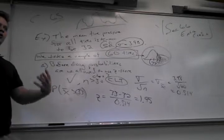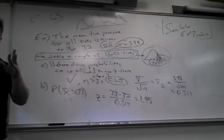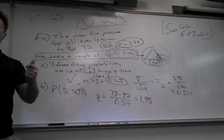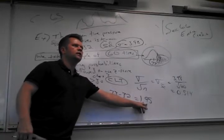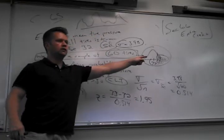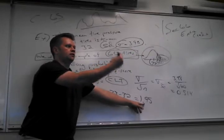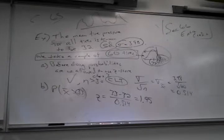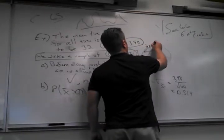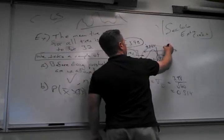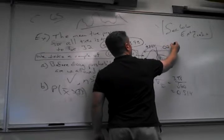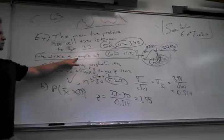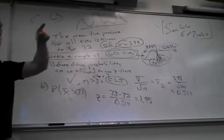When I look up 1.95 in the z-score chart, I get about 0.9744. So the actual answer — the probability that the sample mean is more than 33 — is about 0.0256. That's roughly a 2.5% chance of picking a sample of 60 tires with average pressure more than 33.